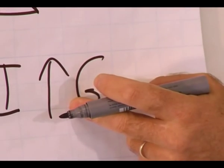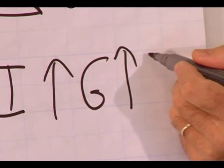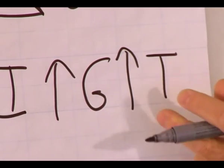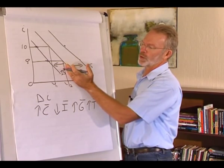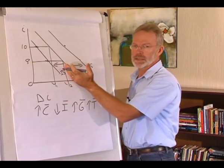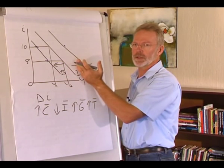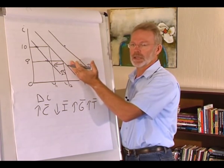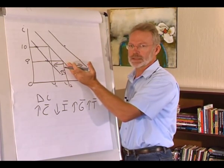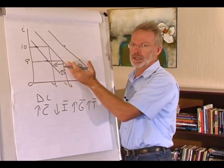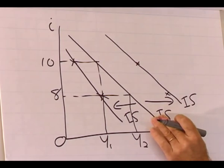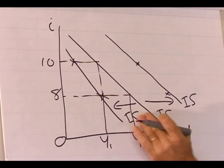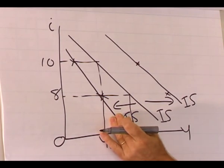The last example is an increase in taxes. If taxes increase, what will happen to the IS curve? A shift to the right? No. The increase in taxes means spending will decrease in the economy. Therefore, the IS curve will shift to the left.